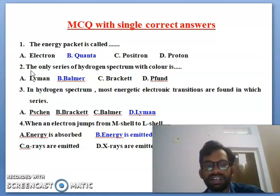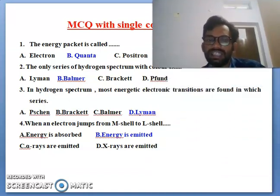Second one bit is the only series of hydrogen spectrum with color is called Lyman, Balmer, Bracket, Pfund. So the right answer is Balmer. Balmer is the hydrogen spectrum with color. Third one bit, you can see here clearly in hydrogen spectrum the most energetic electronic transitions are found in which series. So the right answer is Lyman.